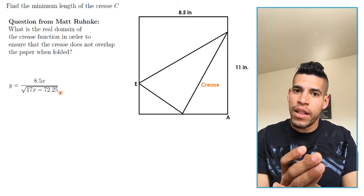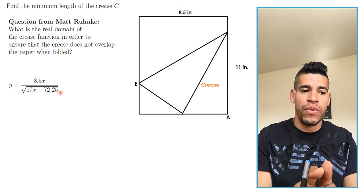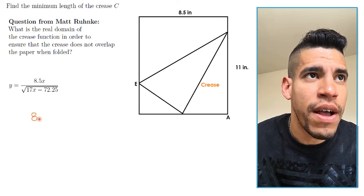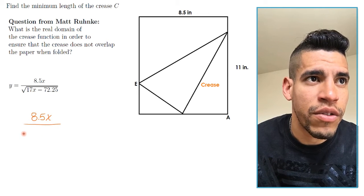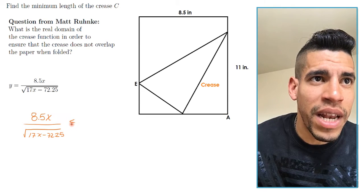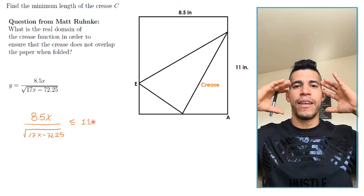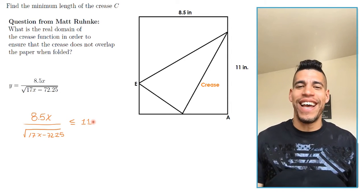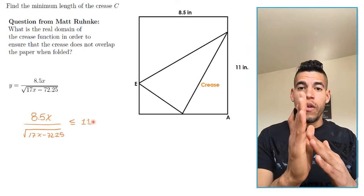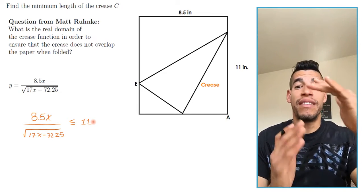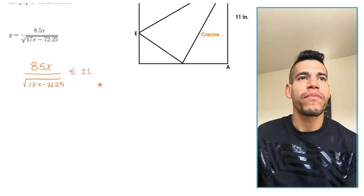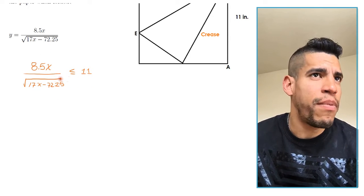I realized today that what I needed to restrict is that y has to be less than or equal to the total length. That means 8.5x divided by the square root of 17x minus 72.25 has to be less than or equal to 11. That's the key insight — the y value cannot exceed 11 because that's the maximum length of y. So I want to find what values of x satisfy that. We divide by 8.5 on both sides.